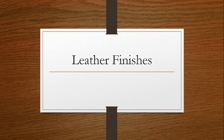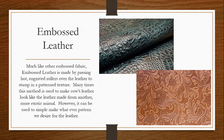Leather finishes. Just like with our woven fabrics, leathers can have a variety of different finishes. Embossed leather is made by passing hot engraved rollers — or sometimes individual metal stamps — over leather to stamp in a pattern texture. The rollers are very hot and produce a lot of steam. Many times this method is used to make cow's leather look like it was made from another exotic animal — for example, a cowhide dyed and embossed to look like alligator skin.